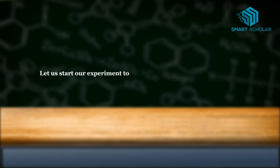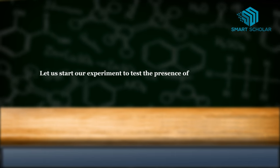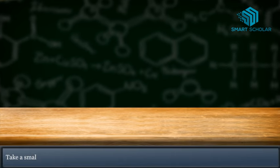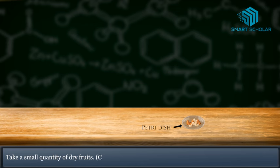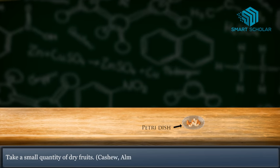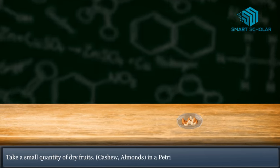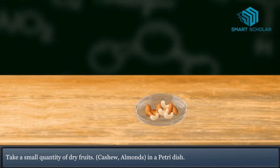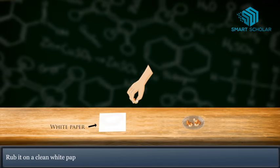Let us start our experiment to test the presence of fat in food. Take a small quantity of dry fruits such as cashew nuts or almonds in a petri dish. Rub it on a clean white paper.